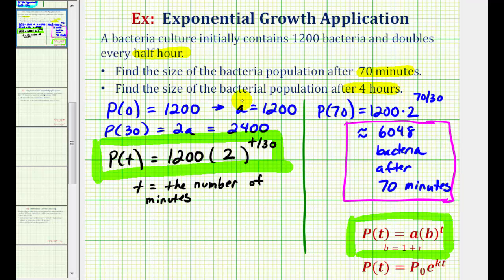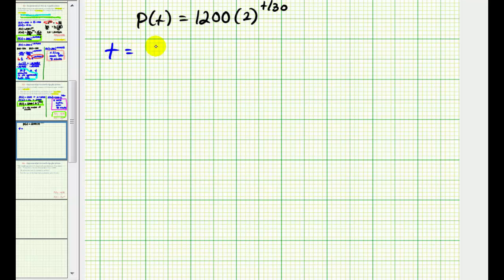Now let's determine the population after four hours. Well, for t equals four hours, we need to convert this into minutes. So this would be four times 60 minutes, or 240 minutes.